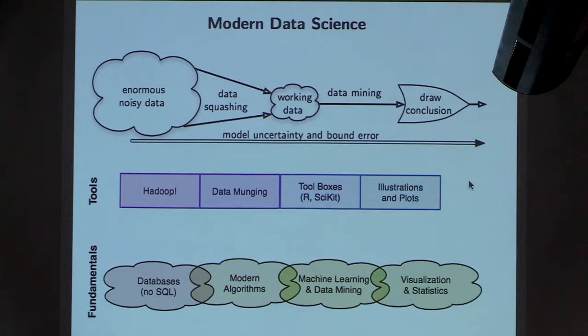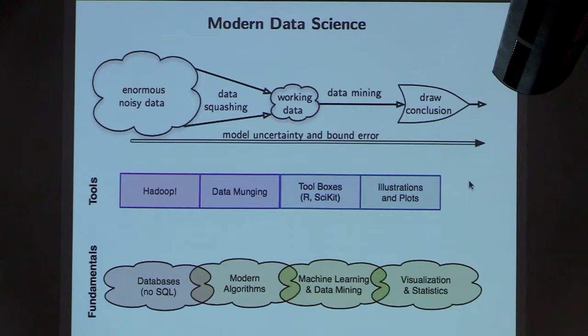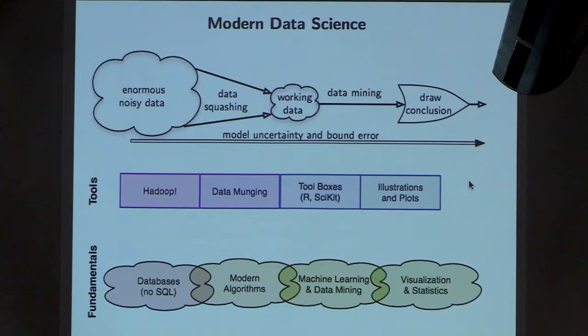Our view is that there are new fundamental parts out of the computer science program which are building the foundations of all these techniques. There's the idea of NoSQL databases. If you took a database class 10 years ago, it almost surely would have been based on SQL — very structured, rigid, well-formatted data. Most modern data is not like this: it has missing elements and lots of different types all put together. So SQL databases aren't always the best tool. Dealing with data at scale and understanding the implications, pulling out parts efficiently — a lot of modern algorithms deal with how to do this very efficiently and understanding the trade-offs.